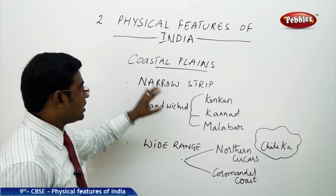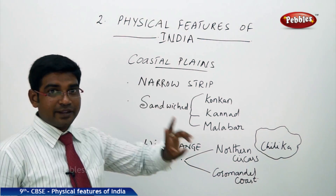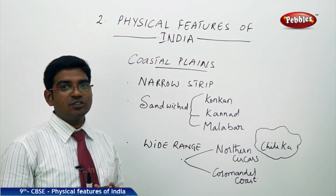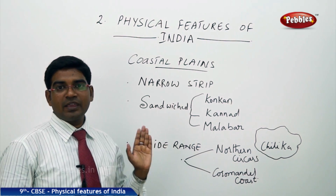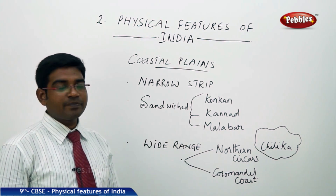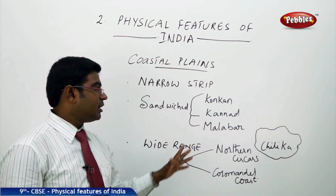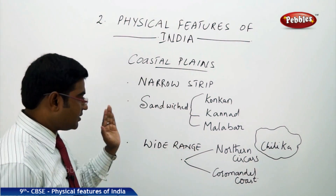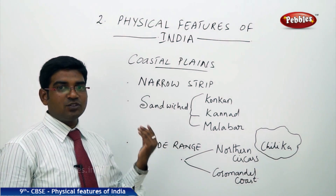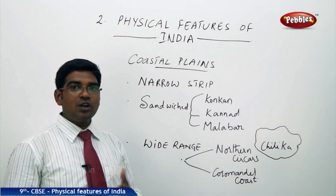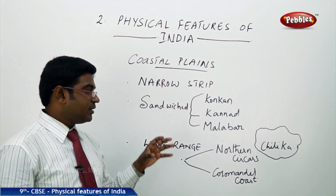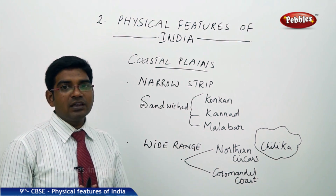To summarize, the coastal plains are on both sides of India — the western side and the eastern side. The western plains are sandwiched between the Western Ghats and the Arabian Sea, and are called by three different names: Konkan, Karnad, and Malabar Coasts. The eastern side is very wide, contrary to the narrow western side, and is called Northern Sarkars and Coromandel Coast. The important attraction on the eastern side is Lake Chilika.